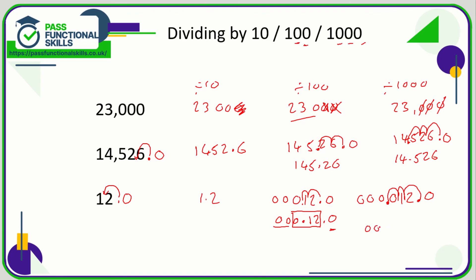So the answer is 0.012, and again we can get rid of these two zeros because they're not doing anything, and that zero on the end can be omitted as well. So the final answer is 0.012.